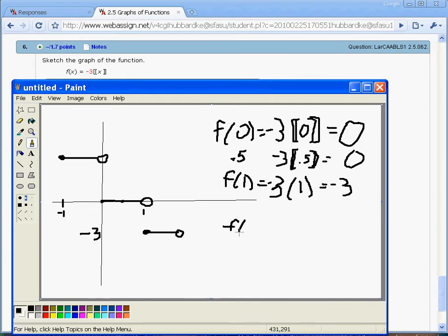plug in f of negative 1, and so negative 3 times the floor of negative 1.